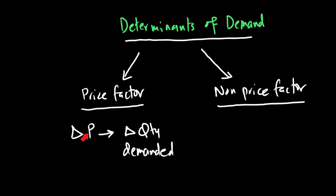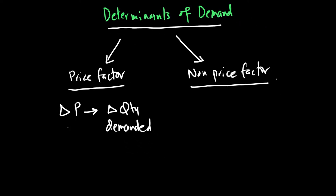So far, when we saw the price of a good go down and quantity demanded go up, our assumption was that we're keeping everything else constant. What if I change that assumption and figure out what will happen if all the other factors are not constant? For example, something changes which results in us buying more of a good — like in winters, people buy more sweaters or jackets because it's useful. So if the other factors change, what happens to demand? That's what we call non-price factors.